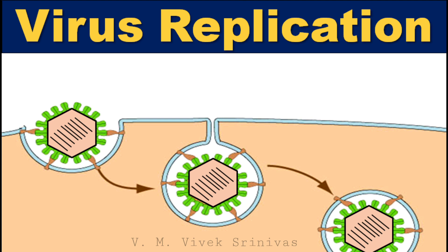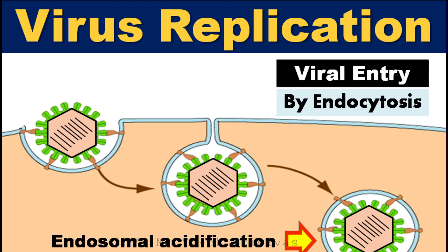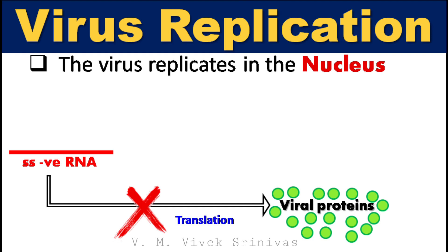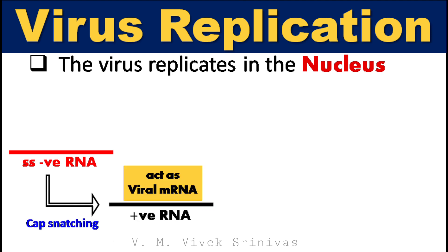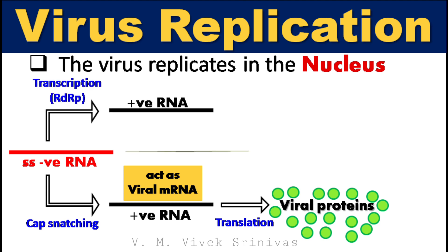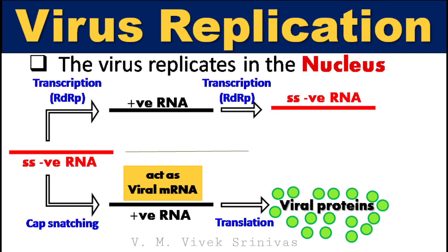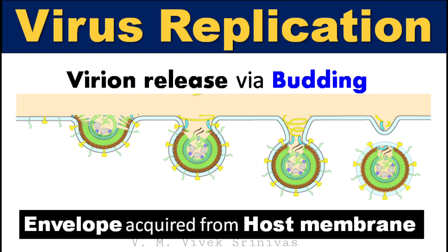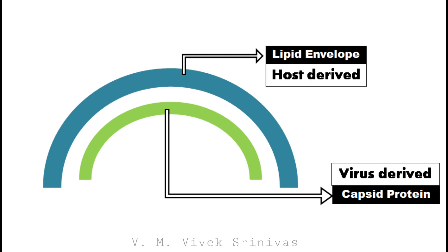Virus replication: The influenza virus enters the host by endocytosis. Following entry, genomes get released by endosomal acidification. This virus replicates in the nucleus. Each genome segment is negative-sense RNA, so they cannot translate or be infectious on their own. They must first transcribe to positive-sense RNA by an unusual phenomenon in orthomyxoviruses called the cap-snatching phenomenon. This transcribed positive-sense RNA, similar to mRNA, can be translated to viral proteins. The negative-sense viral RNA is also transcribed for the complementary strand. Later, the transcribed negative-sense viral RNA and translated viral proteins self-assemble to form virions, which are released through budding from the host membrane, acquiring their lipid envelope in the process.